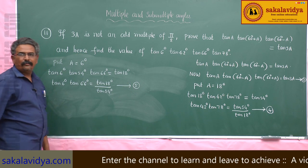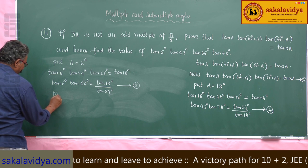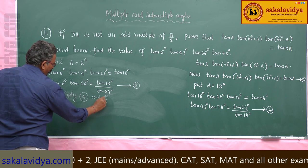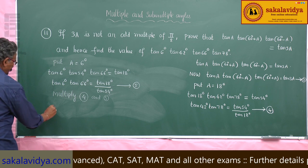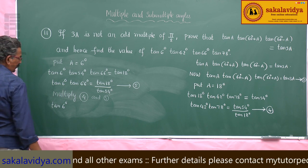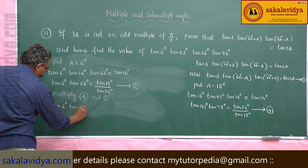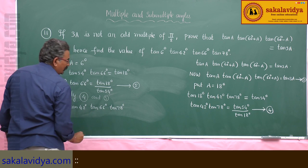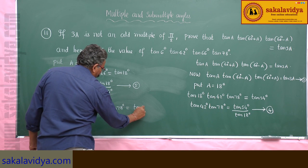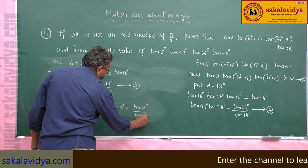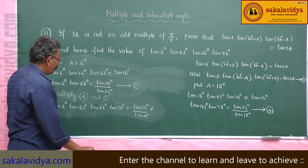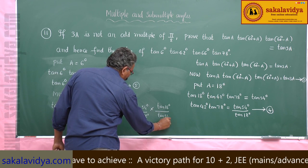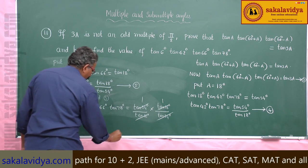Multiply equations 4 and 5. We get tan 6° · tan 42° · tan 66° · tan 78° = (tan 54° / tan 18°) · (tan 18° / tan 54°). The tan 18° and tan 54° terms cancel, giving us 1.